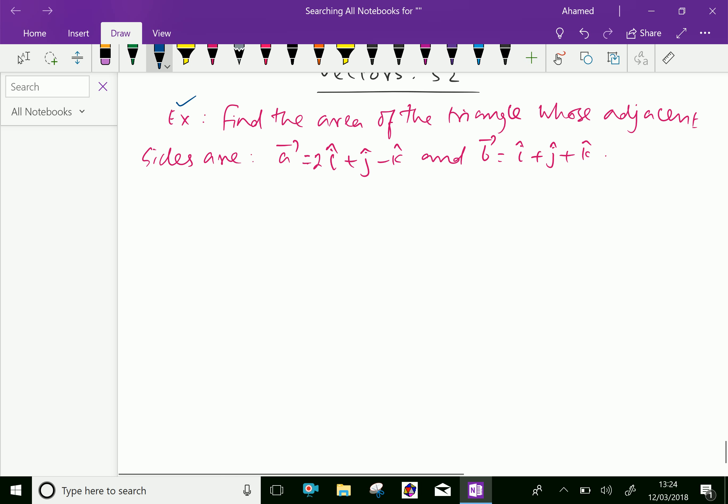Now, the vector a equal to 2i plus j minus k and vector b equal i plus j plus k.